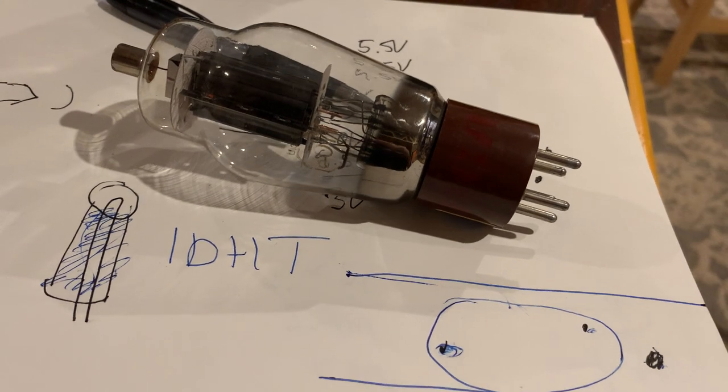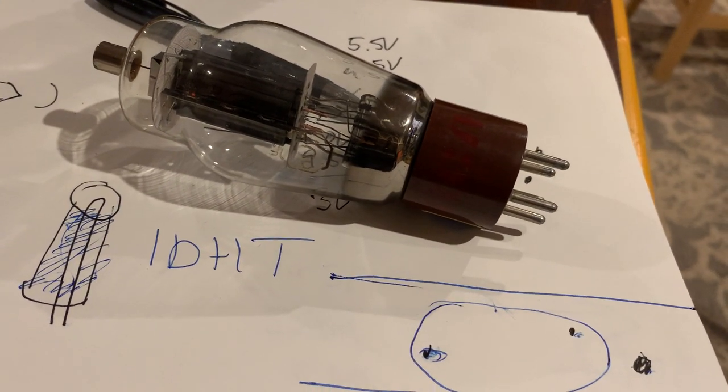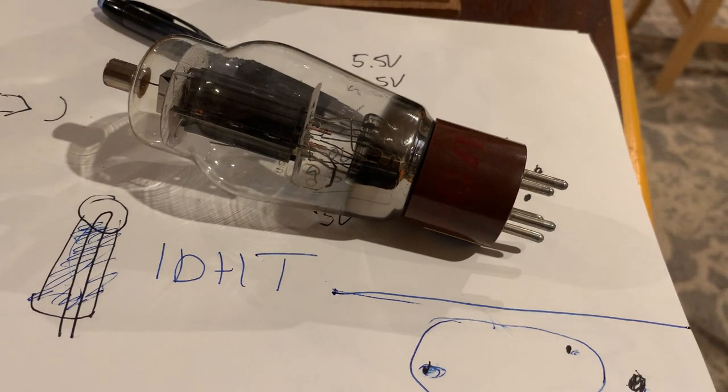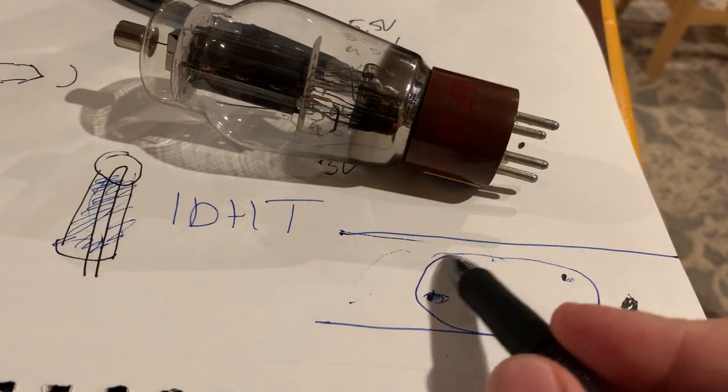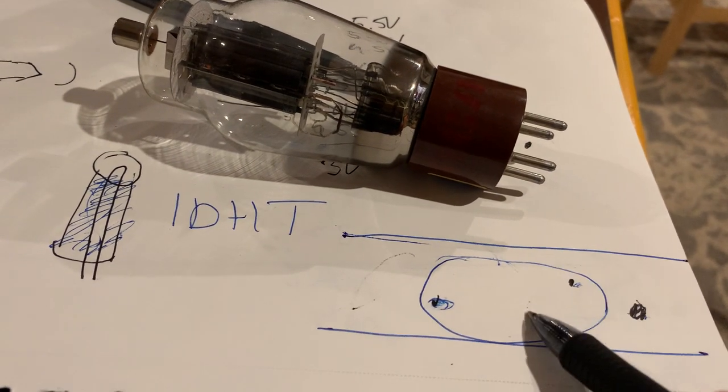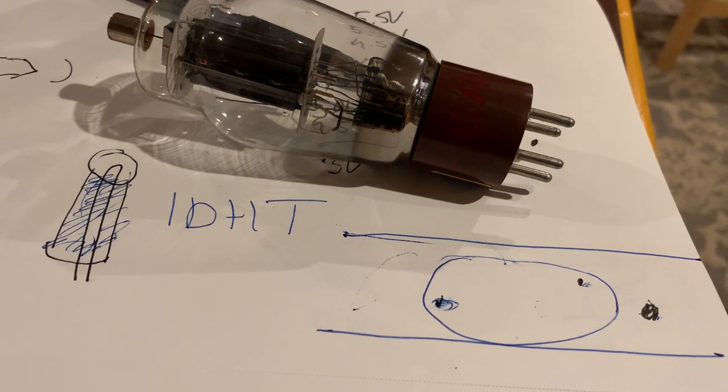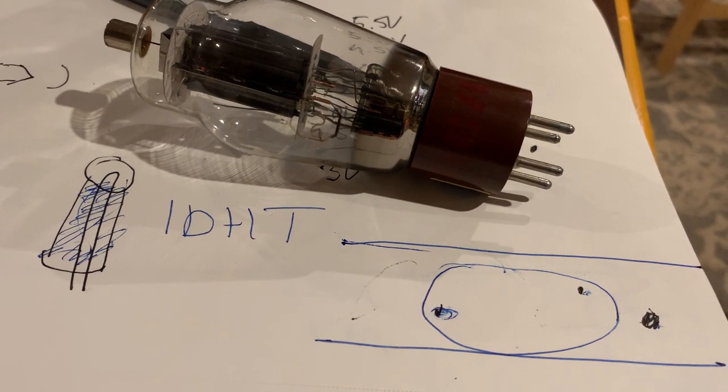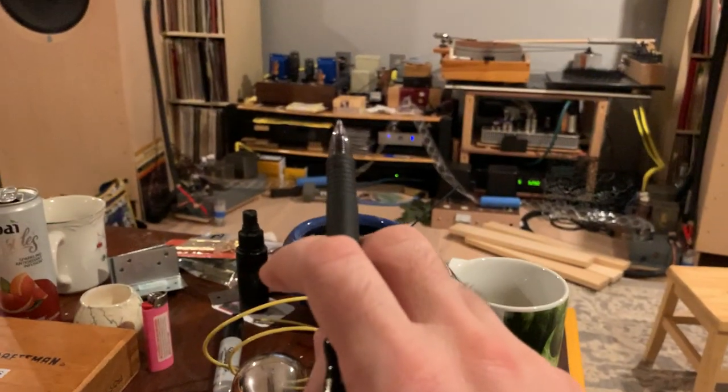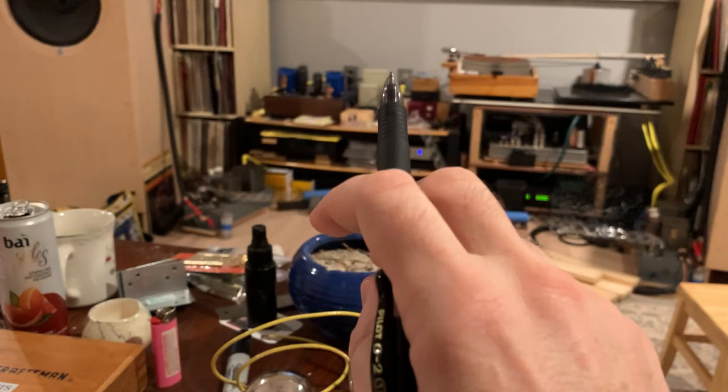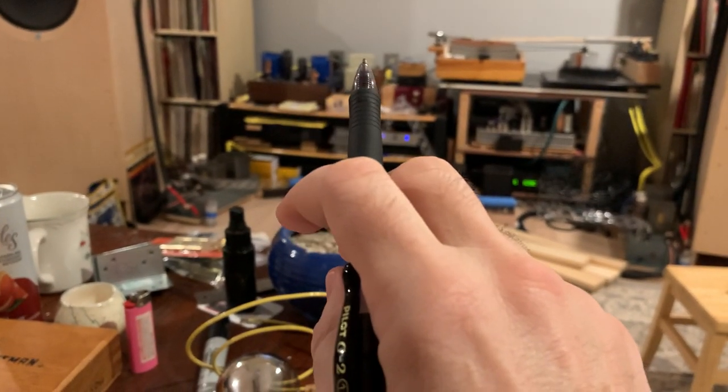And it has one additional advantage, in addition to improving the tube life. Because you are keeping the filament always warmed up, when you turn on your amplifier, the warm-up time is drastically reduced. That's right. So that little amp there, so when you look at it, the power transformer for it, it's about a 500 watt core.